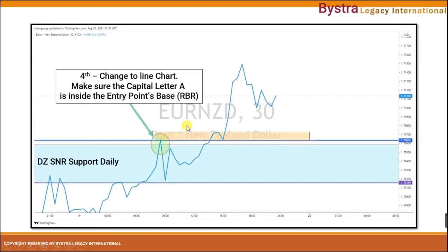We go to the line chart. When we move to the line chart, we can see that capital letter A — the resistance here — is very strong and sharp. This is a very good resistance, and it is inside the rally-base-rally entry point. Our entry point will be capital letter A at 1.70636. The resistance is inside the base, so this is a valid SOP for SNRC1.